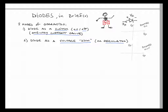Here is the symbol for a diode. There is a positive terminal called the anode (A), and a negative terminal called the cathode (C or K). We label the current and voltage IF and VF, where F stands for forward — IF is the forward current and VF is the forward voltage.